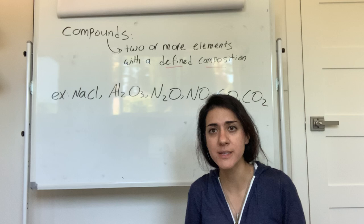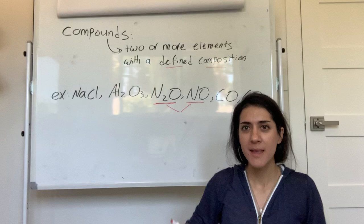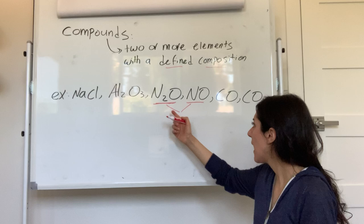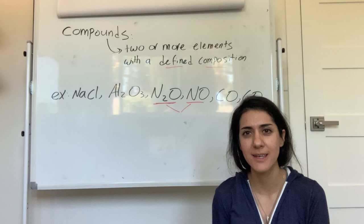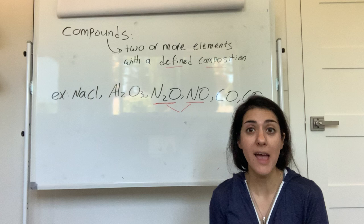I want you to pay attention to the composition part. Let's look at NO2, N2O, and NO. They look very similar — they both have nitrogen and oxygen, and one of them has an extra nitrogen. Do you think N2O and NO have similar properties or completely different properties? They both have the same elements: nitrogen and oxygen, with one just having one extra nitrogen.